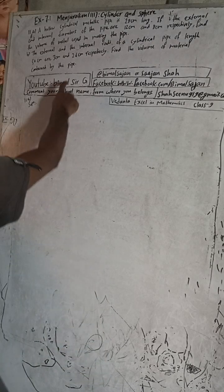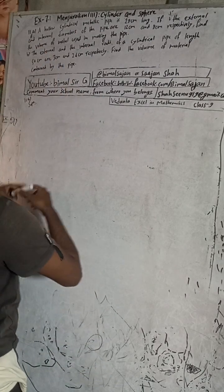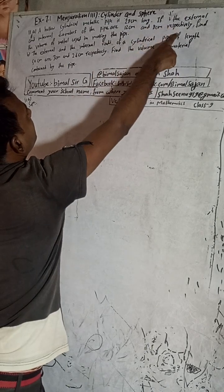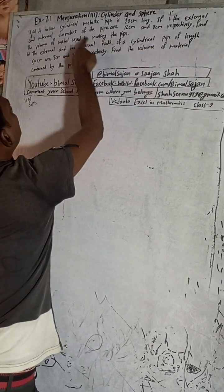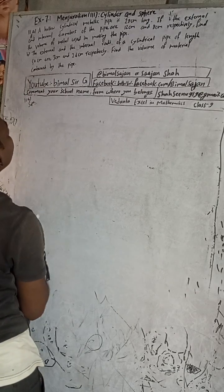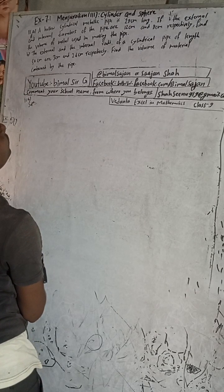Hi Class 9 and 10 students, welcome back to Bhimalsarji YouTube channel. This is question number 11A, exercise 7.1 — mensuration, third part: cylinder and sphere. Check the playlist for more solutions. The question is: a hollow cylindrical metallic pipe is 28 cm long. If the external and internal diameter of the pipe are 12 cm and 8 cm respectively, find the volume of the metal used in making the pipe.